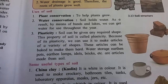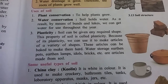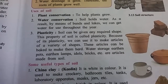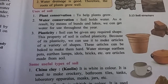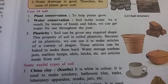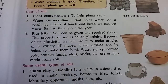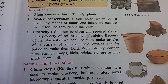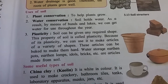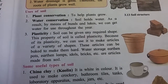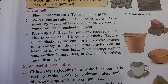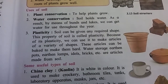Soil holds water, and as a result, through ponds and lakes we can get water for use throughout the year. Third use is plasticity — soil can be given any required shape, and this property of soil is called plasticity.